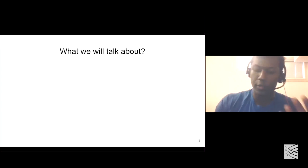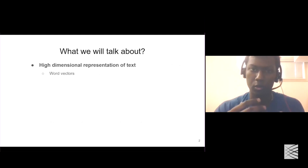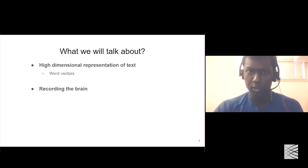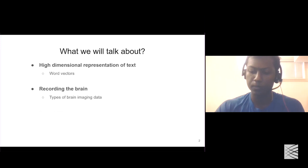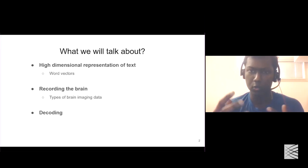So what will we talk about? First, we will talk about high-dimensional representations of text, and in that section we're going to look into word vectors. Then we will look into how we can record the brain and get some idea of what the brain does under certain conditions, and we will look into types of brain imaging data.